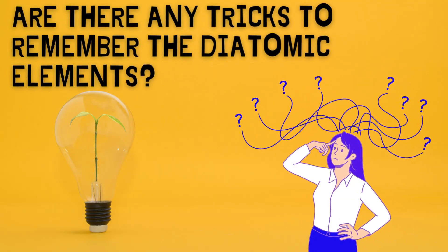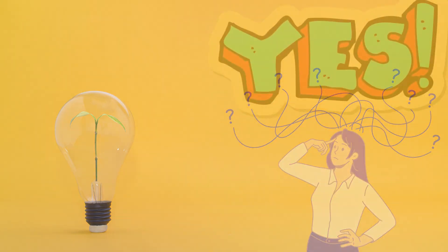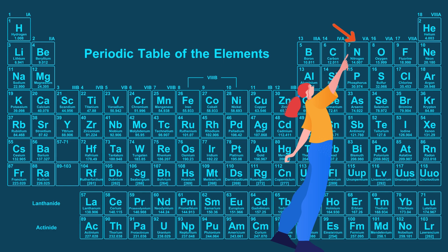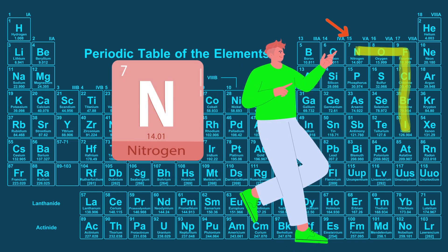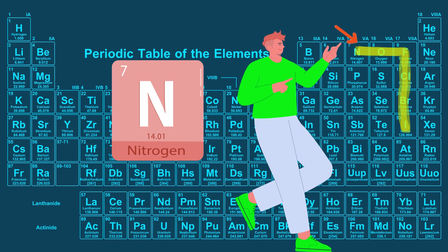Are there any tricks to remember the diatomic elements? Yes, here is trick one. Notice how they follow the number seven pattern starting from element number seven, which is nitrogen, and continuing with elements 8, 9, 17, 35, and 53.